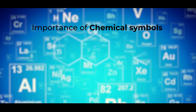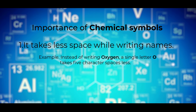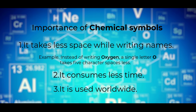Now that we have learned how to write a chemical symbol, it is also important for us to learn the importance of chemical symbols. Number one: it takes less space while writing the names. For example, instead of writing 'oxygen', which is a six-letter word, a single letter O takes five character spaces less. Number two: it consumes less time. Number three: it is used worldwide by scientists everywhere.